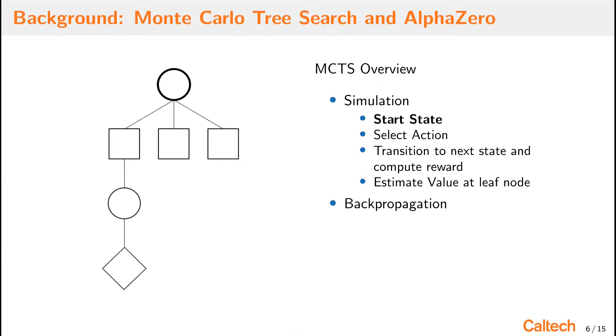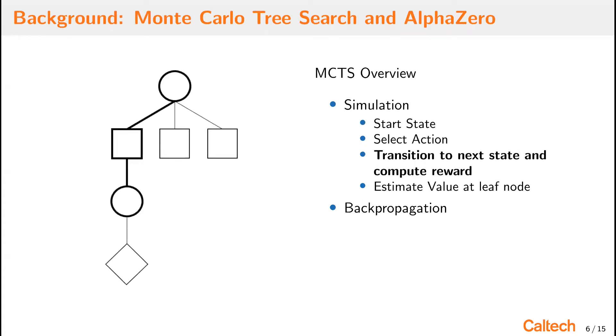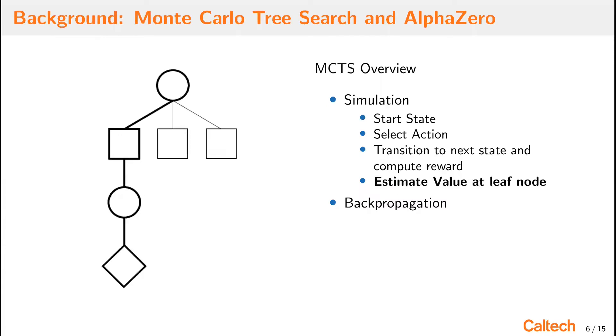The simulation step starts at the root node, which is the current state of the world. Then it selects an action, transitions to the next state, and computes the reward. And upon arriving at a leaf node, it estimates the value. The simulation is then complete and the information is back-propagated up the tree.